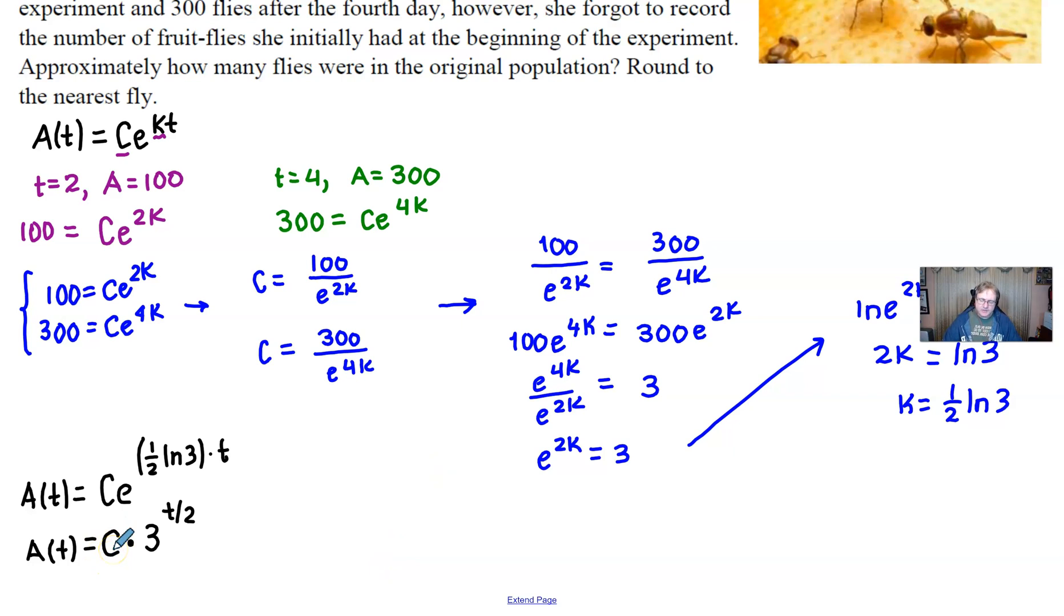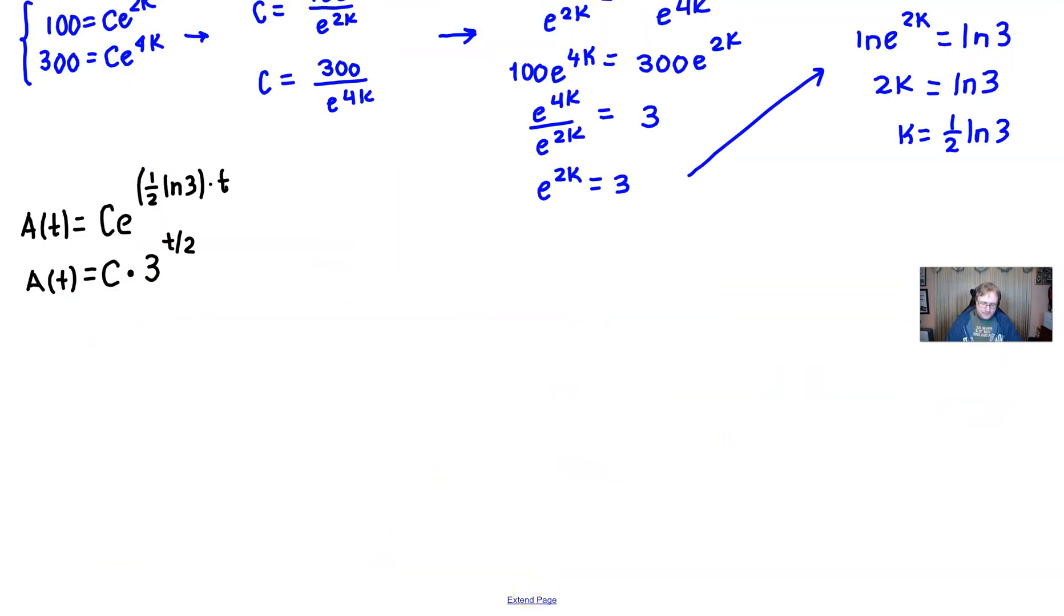Now, we have yet to find our c, which is what the goal of this problem is. Essentially, we're looking for what is the value of the number of flies when time is 0? And so if we plug 0 in for t, we end up with c equaling, I should say, we get c times 3 to the 0/2 power.